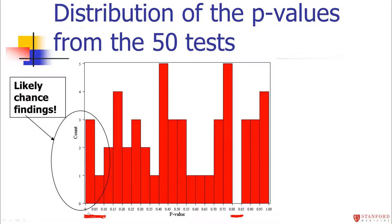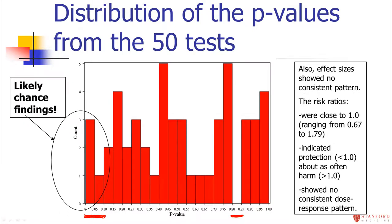The p-values that were statistically significant — the 0.02 and 0.08 values — are almost certainly chance findings, completely consistent with what you'd expect by chance. If you do 50 tests, some are going to come out significant. Other features confirm this: the effect sizes showed no consistent pattern, risk ratios ranged from 0.67 to 1.79 with no big values, about half were below one and half above one — a pattern consistent with chance. There was no dose-response pattern with caffeine level either.